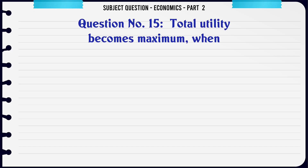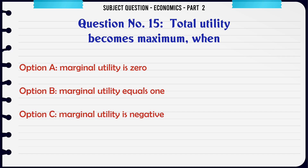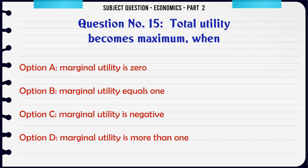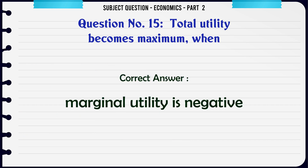Total utility becomes maximum when: A. Marginal utility is zero. B. Marginal utility equals one. C. Marginal utility is negative. D. Marginal utility is more than one. The correct answer is: Marginal utility is negative.